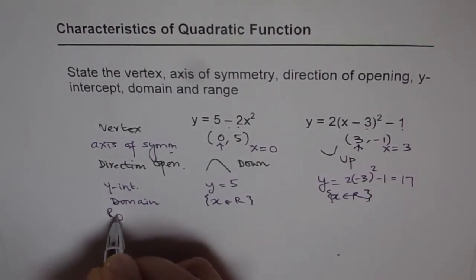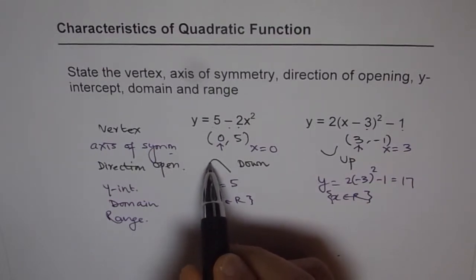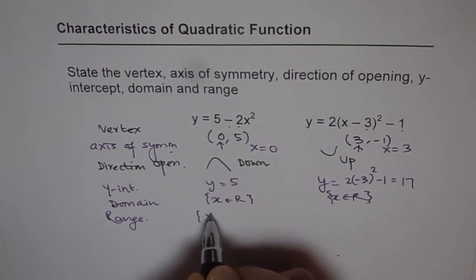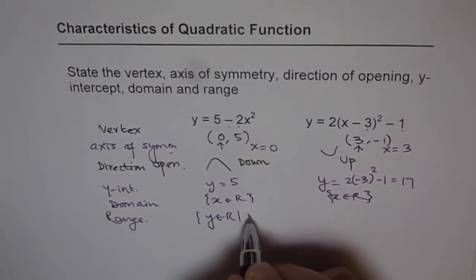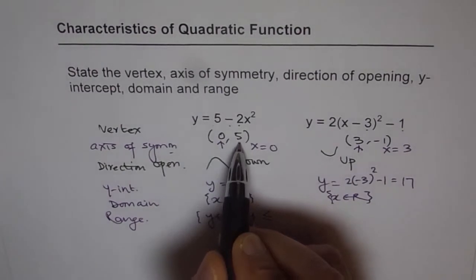As far as the range is concerned, range really depends on the direction of opening and the vertex. Now this parabola opens downwards. So y belongs to real numbers but y is less than equal to the maximum value. What is the maximum value? Maximum value in this case is 5.